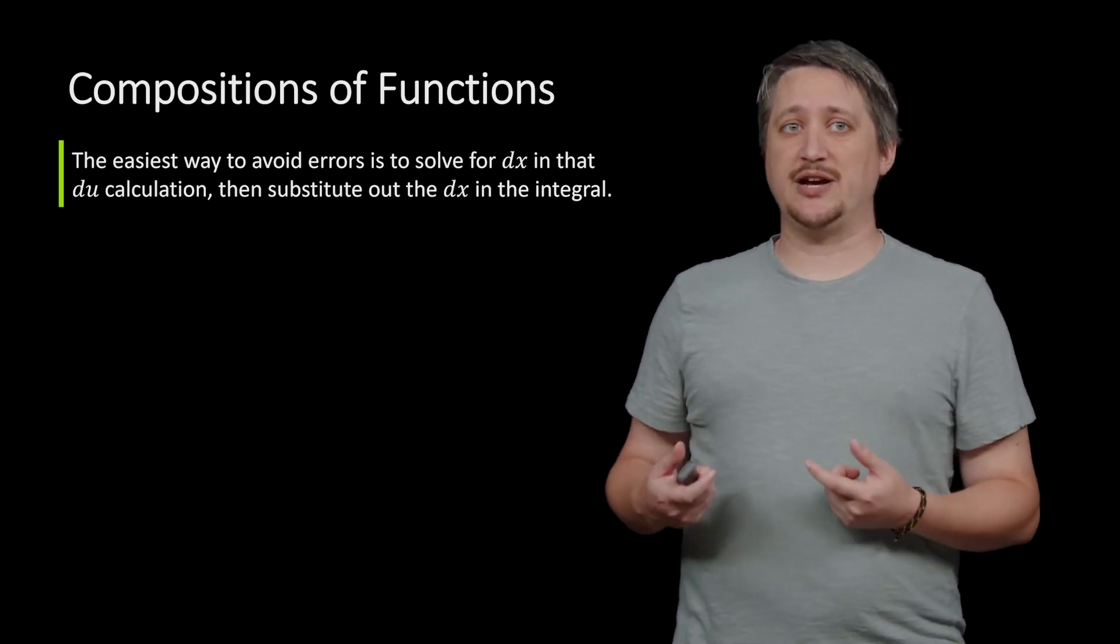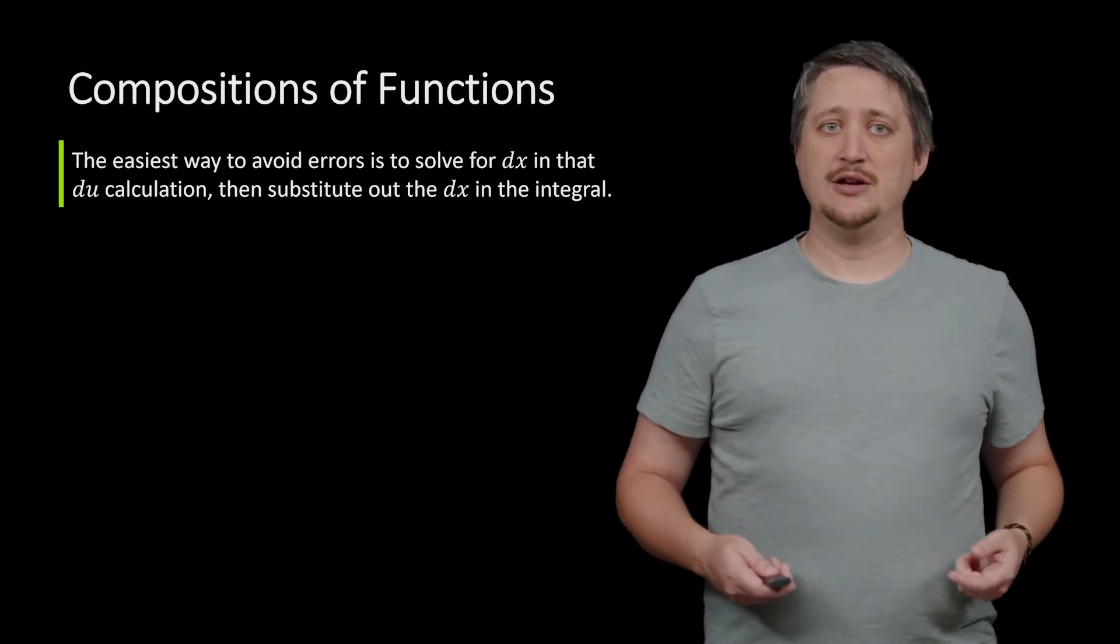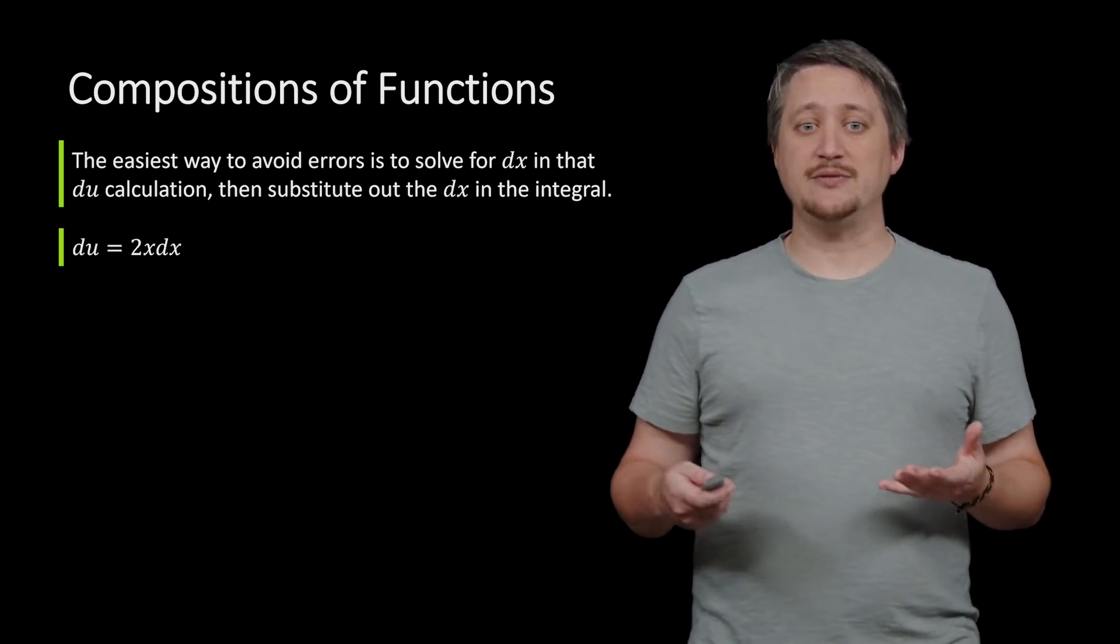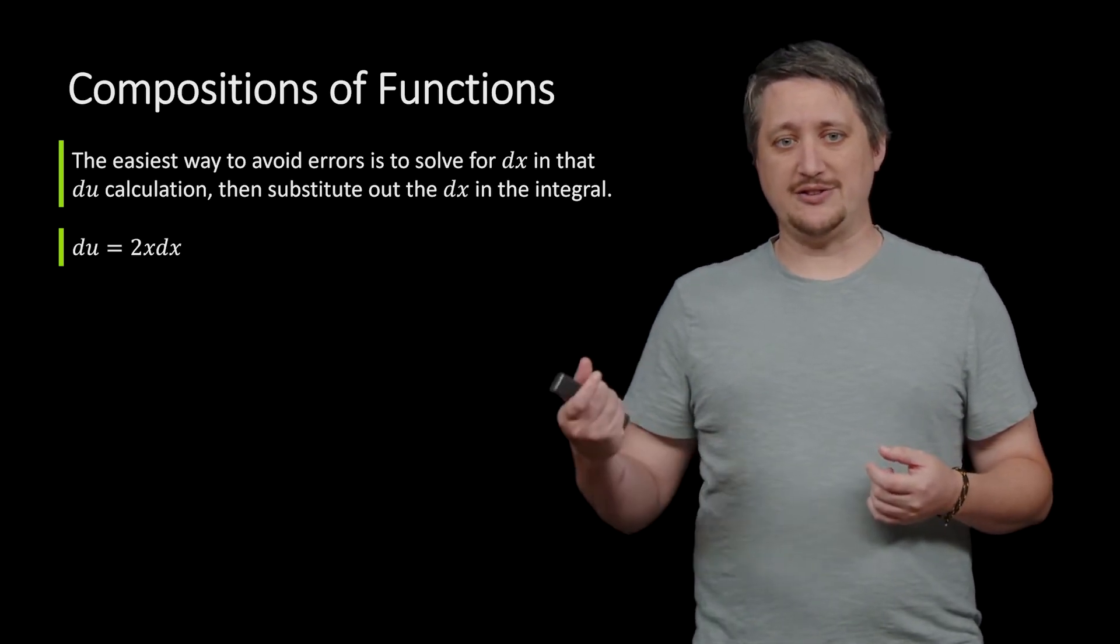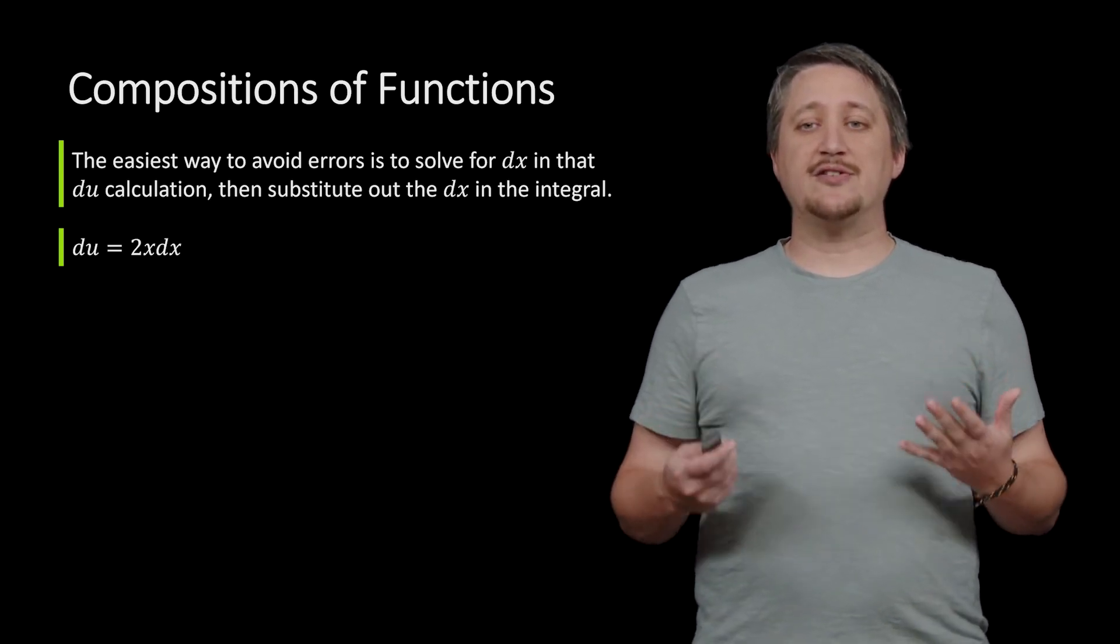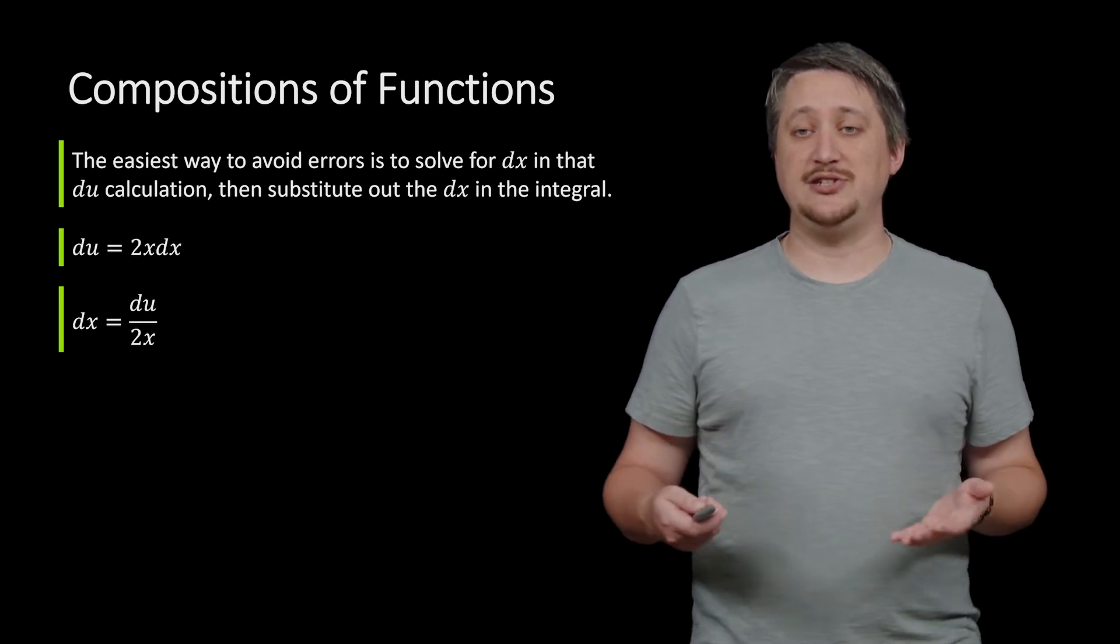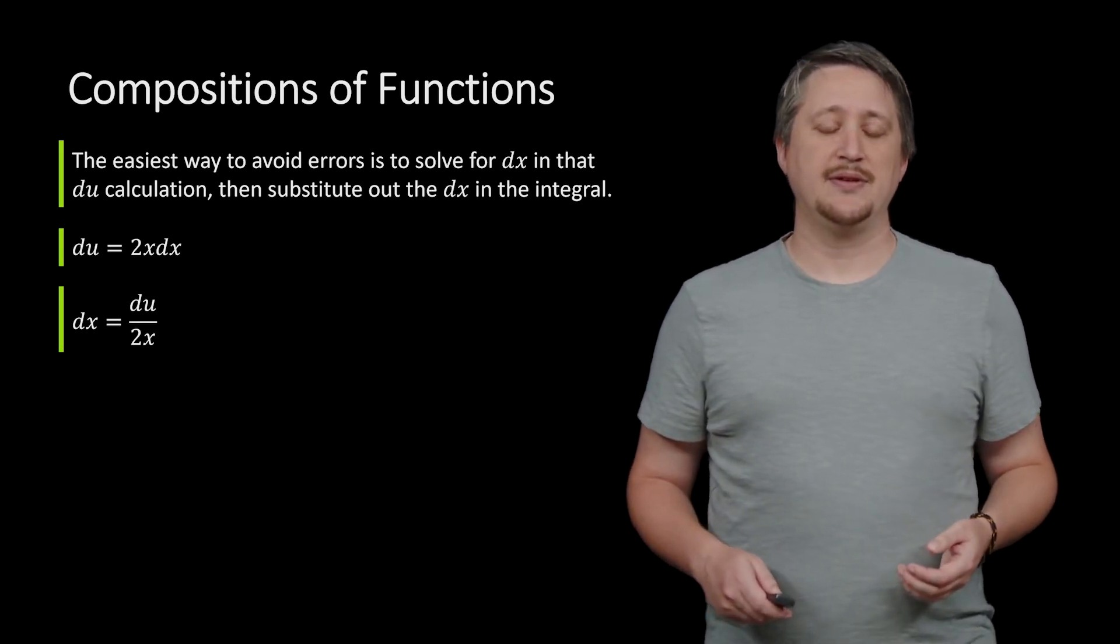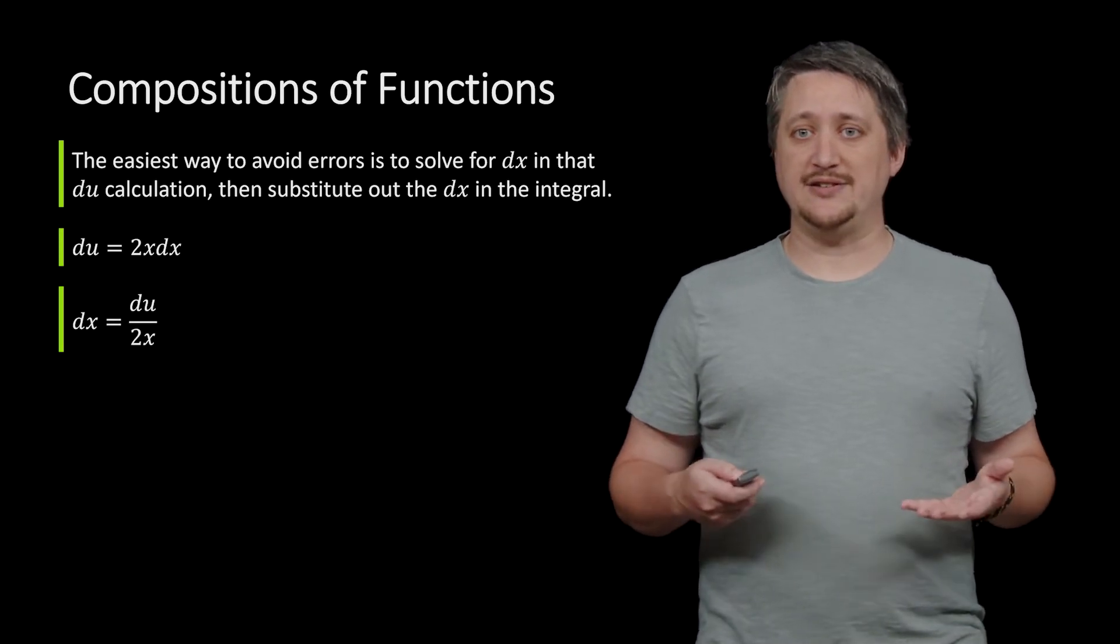So the easiest way to avoid errors with that process of changing from a dx to a du is to solve for dx in the du calculation and then substitute out the dx that's in the integral. So in particular, we had that du being 2x dx because we took the derivative of x squared to get 2x. dx goes with the x stuff, du goes with the u stuff. But then I can solve this for dx. So I could divide both sides by 2x, that gets me dx is du over 2x.